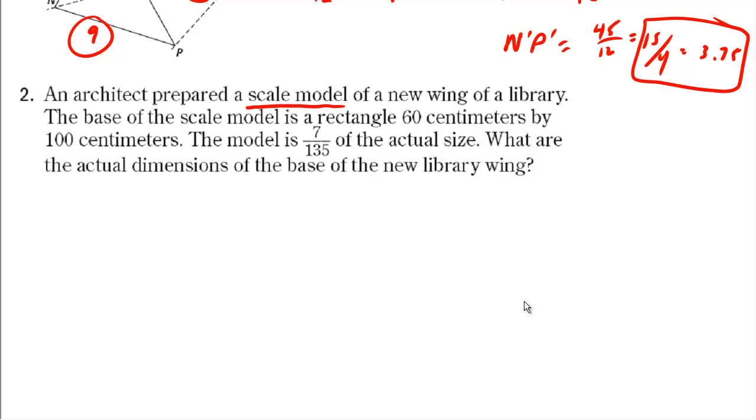The last example, number two here, says an architect prepared a scale model of a new wing of a library. The base of the scale model is a rectangle 60 centimeters by 100 centimeters. The model is 7 over 135 of the actual size. What are the actual dimensions of the base of the new library?